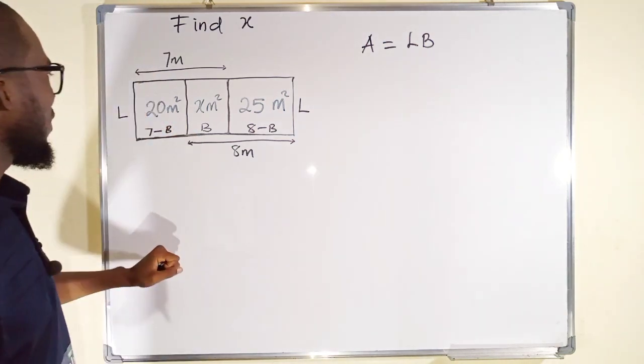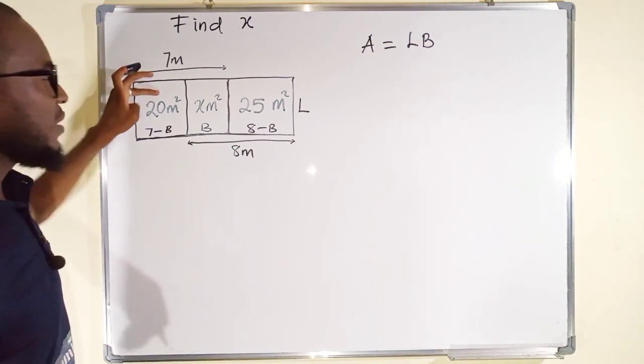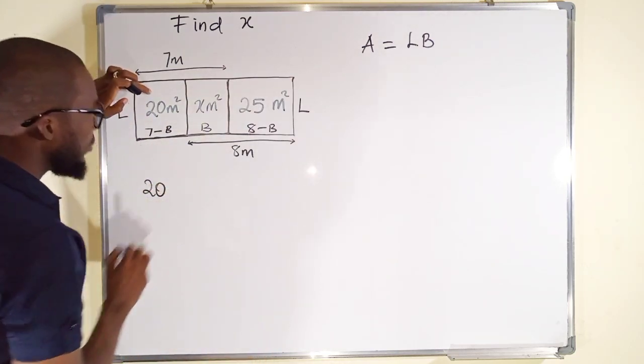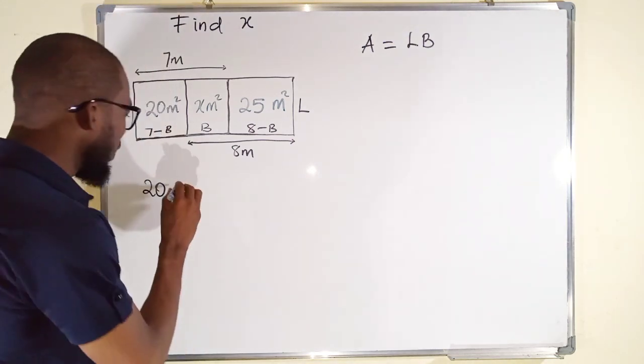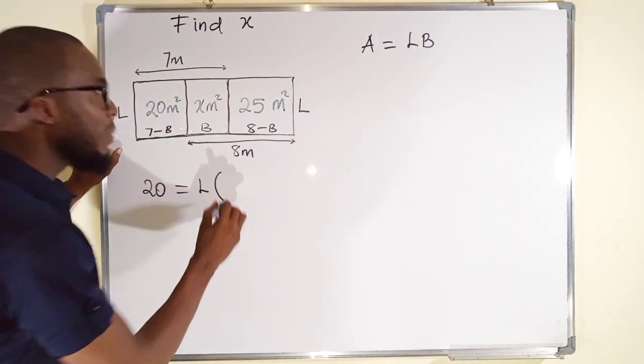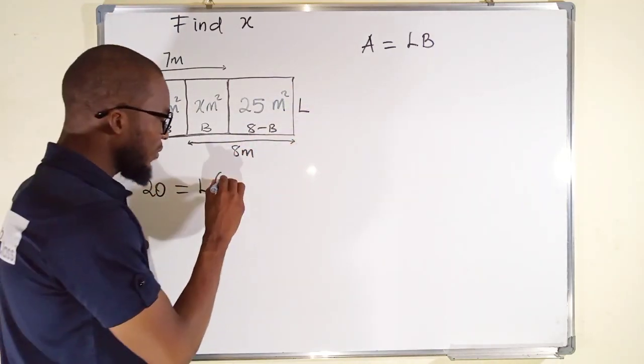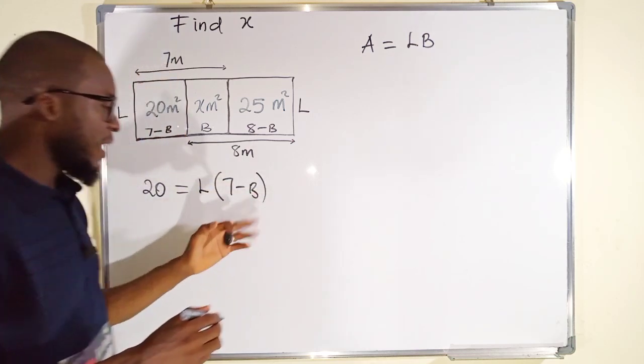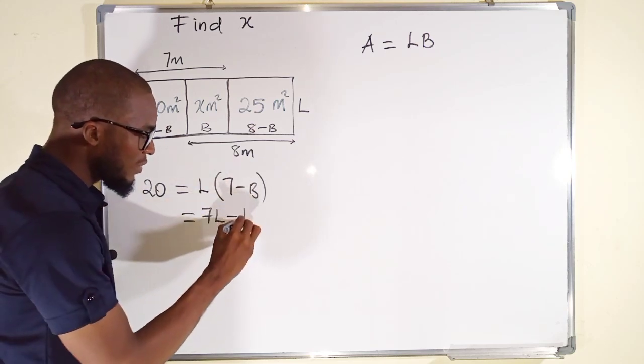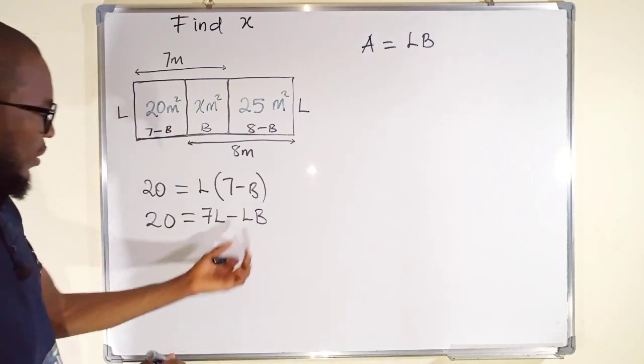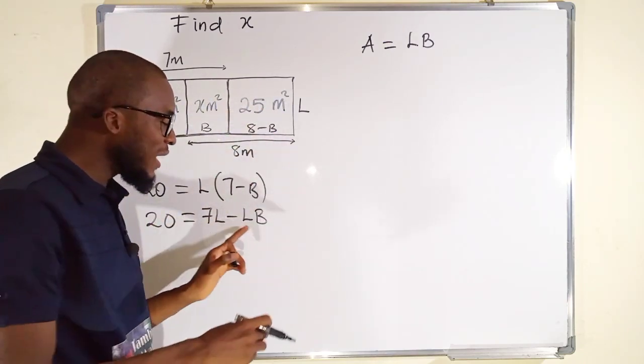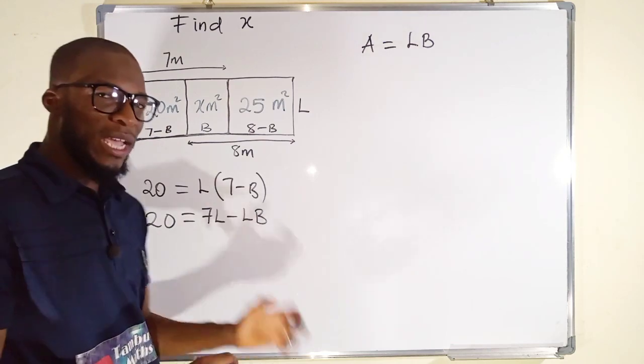What I will do next is to find a formula connecting the first rectangle and the last one. We are talking about area. The area here is 20 meters squared. I don't have to put the unit in the end. I can bring it back. It is the same thing as the length and you can see we have length here as L. Multiply by the breadth and the breadth is 7 minus B. We have 7 minus B. I can expand this from here. This becomes 7 times L is 7L minus L times B is LB. This is 20. You see we have LB here. Definitely while finding the formula connecting this area, I will obtain another LB. So, I can make LB from here the subject of this equation.